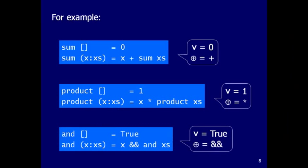Let's look at more examples of this pattern. To sum a list: the empty list maps to 0, otherwise take the head and add it to the sum of the rest. To multiply all elements: the empty list gives 1, otherwise multiply the head with the product of the rest. So for product, the value `v` for the empty list is 1, and the combining operator is multiplication.